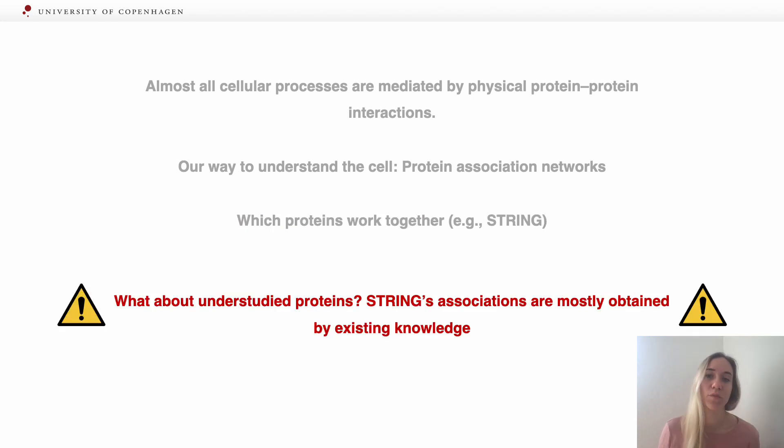But what about understudied proteins? STRING's associations are mostly obtained by existing knowledge. The high confidence pairs are coming either from text mining on the scientific literature or the databases. That means we cannot say a lot of things about the understudied proteins, which by definition don't have enough literature to study.